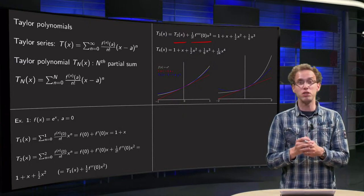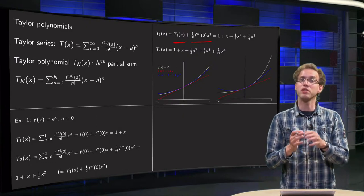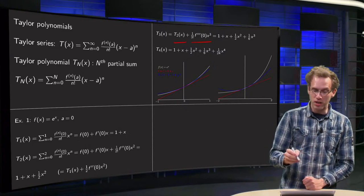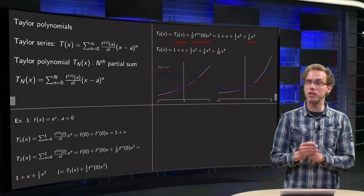Well, f(x) equals e to the power x, so differentiating all along, stays e to the power x, plugging in zero, again one, so we get an extra term one over six times x cubed.